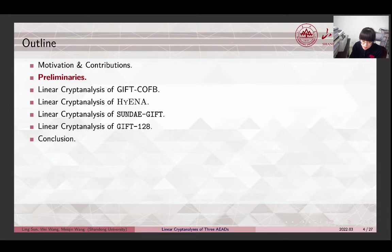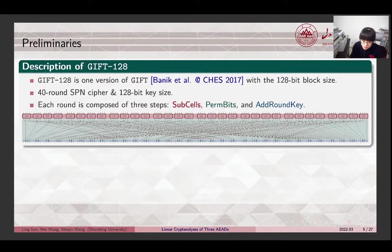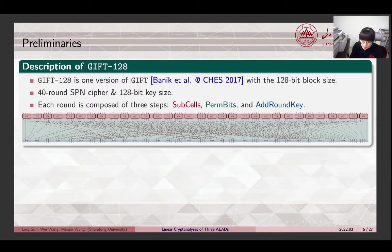Now we briefly recall some necessary preliminaries. GIFT128 is one version of GIFT with a 128-bit block size. It is a 40-round SPN cipher and has a key size of 128. Each round of GIFT128 consists of three steps. In the sub-cells operation, an invertible 4-bit S-box named GS is applied to every nibble of the cipher state. Next, the PermBits operation performs a bit permutation on the cipher state. At last, the AddRoundKey operation includes adding the round key and the round constant. In the figure, we only illustrate the bits that should be XORed with the round key, as adding the round constant does not alter the validity of attacks in the paper.